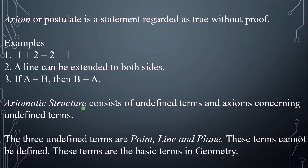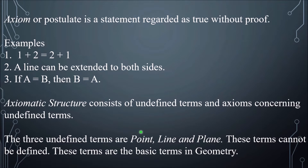Axiomatic structure is a structure that consists of undefined terms and axioms concerning those undefined terms. The three undefined terms of geometry are point, line, and plane. These terms cannot be defined, that's why they are called undefined terms. You cannot define a point, a line, or a plane, but you can describe and represent them. These are the basic terms in geometry.